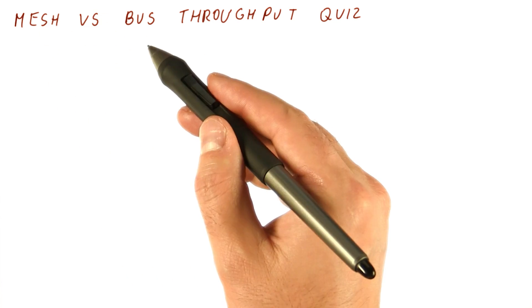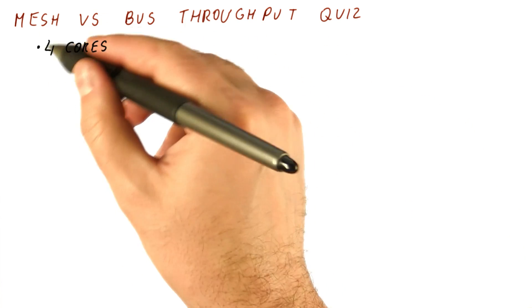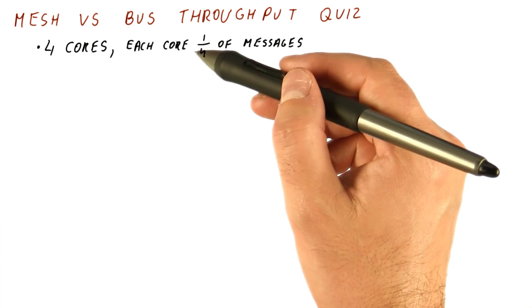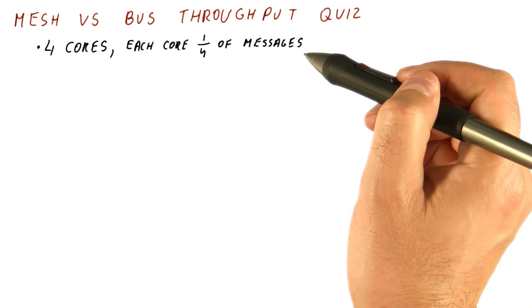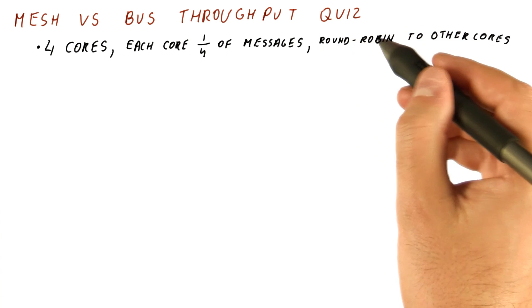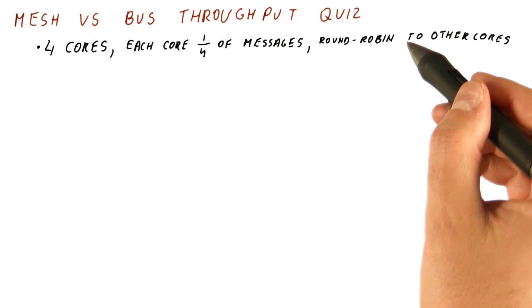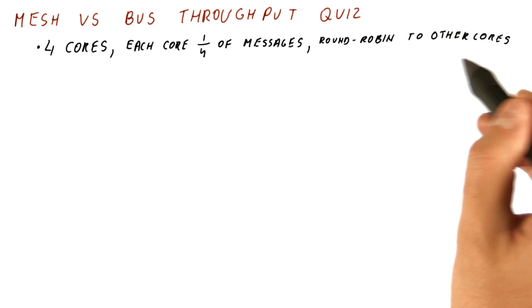Let's see if we can compare the mesh and the bus throughput for a small four core system where the traffic is evenly distributed so that each core sends a quarter of all the messages in the system. And the messages that each core sends are sent round robin to all the other three cores.